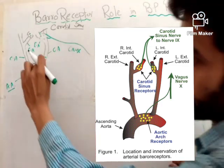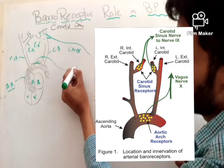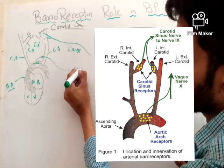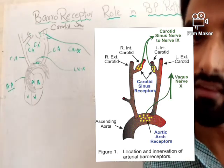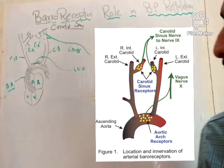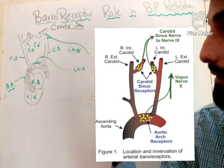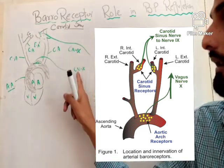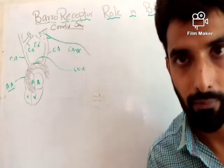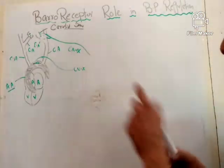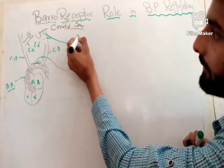The nerve endings in the carotid sinus are nerve endings of cranial nerve 9, and the nerve endings on the aortic arch are nerve endings of cranial nerve 10. These nerve endings are called baroreceptors. So, the nerve ending of cranial nerve 9 present on the carotid sinus, and the nerve ending of cranial nerve 10 present on the aortic arch, are both called baroreceptors. Both of these cranial nerves are afferent nerve fibers.